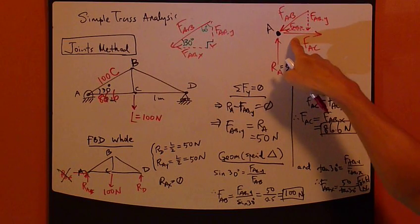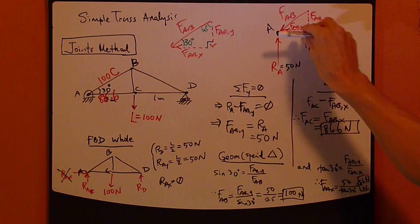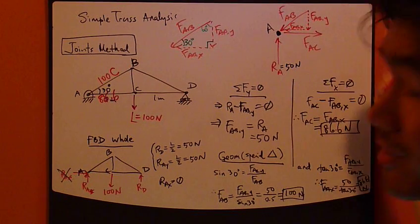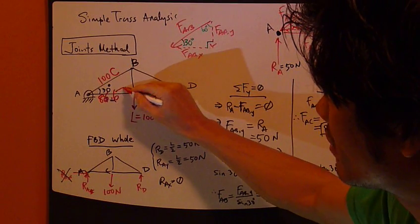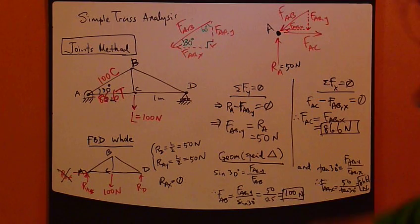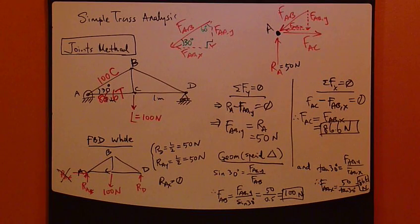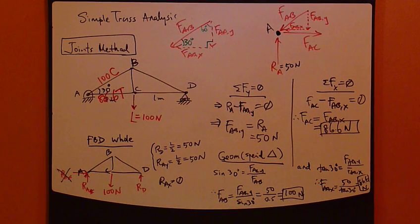Using Newton's third law, knowing this FAC goes away from this joint, this means it's a tension force. So this means that this member AC is under tension. That's how you indicate the results. And we just keep going to the next joint. But which joint?